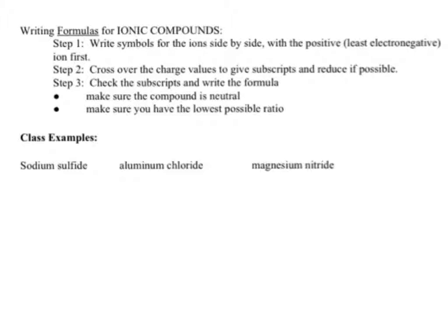Writing formulas for ionic compounds. Step one: write the symbol for the ions side-by-side with the positive ion first. Step two: cross over the charge values to give subscripts and reduce if possible. Step three: check the subscript and write the formula. Make sure the compound is neutral and that you have the lowest possible ratio.